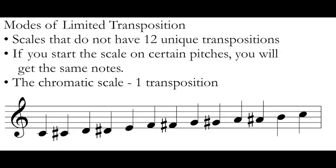We can compare this to a very common mode of limited transposition that you're already familiar with: the chromatic scale. There's only one transposition of the chromatic scale. It doesn't matter what note you start the chromatic scale on — it's always going to consist of all the notes. If you write the chromatic scale on C, or on E, or on A, or on G, you're always going to get all your notes. So the chromatic scale is a common mode of limited transposition.